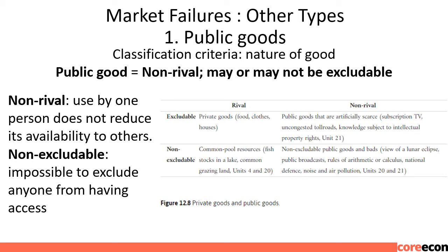Uncongested toll roads are non-rivalrous but excludable because those who do not pay the toll can be excluded from using them. Examples of public goods that are non-rivalrous and non-excludable include: the view of a lunar eclipse, public broadcasts, rules of arithmetic or calculus, national defense, and noise and air pollution.